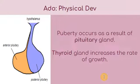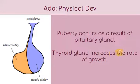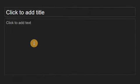The last point for physical development is that puberty occurs as a result of the pituitary gland, or kelenjar pituitary. This is the gland that actually increases the rate of growth — the thyroid gland also increases the rate of growth. This is the gland responsible for puberty and physical growth during adolescence. Benda inilah yang bertanggungjawab, dengan izin Allah. InsyaAllah we're going to go to the next perspective of development.